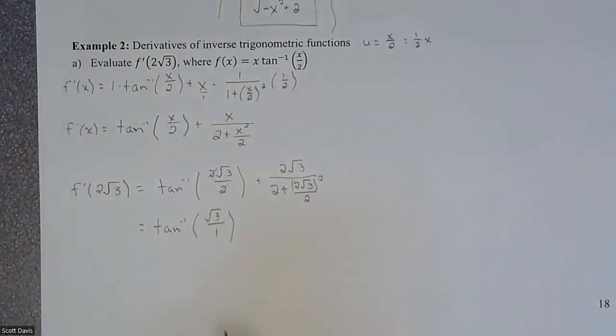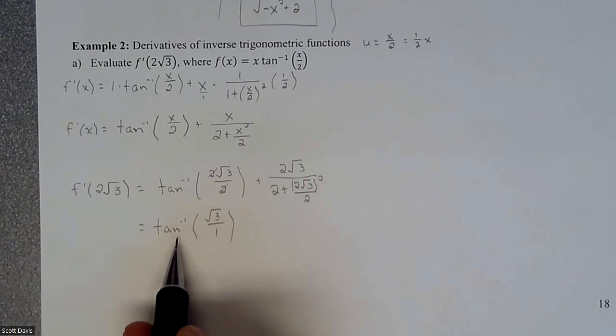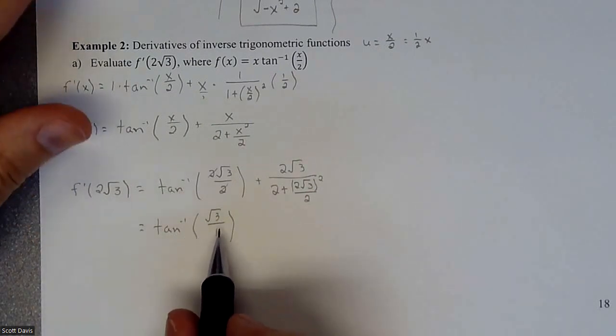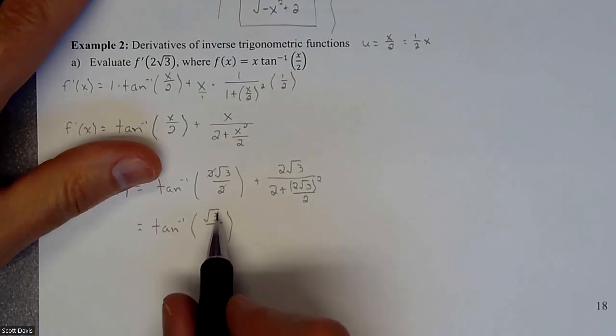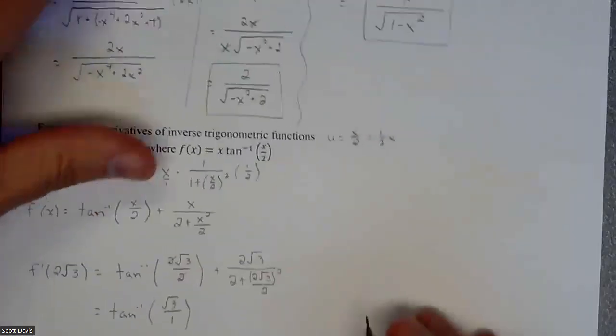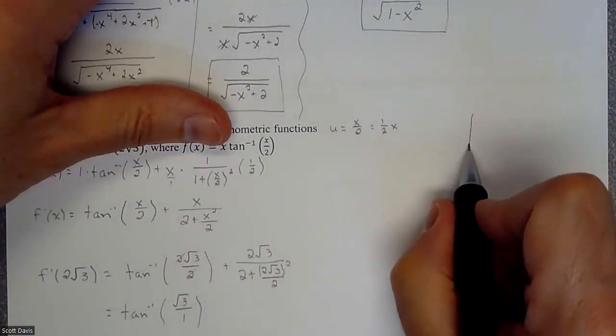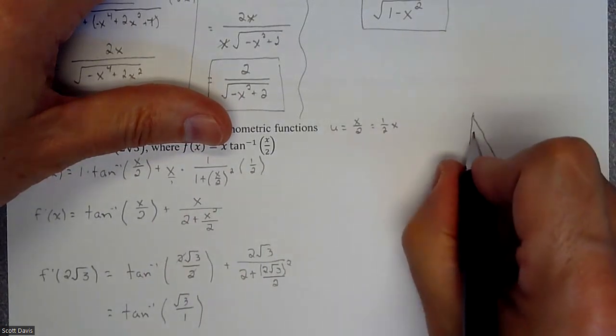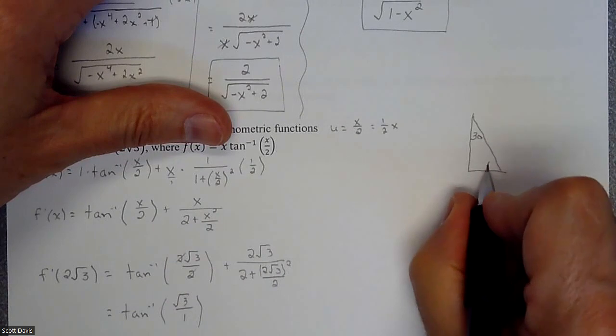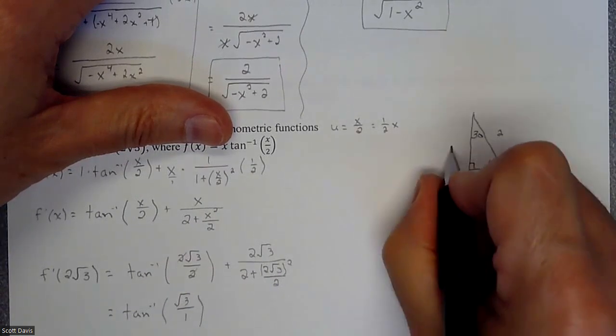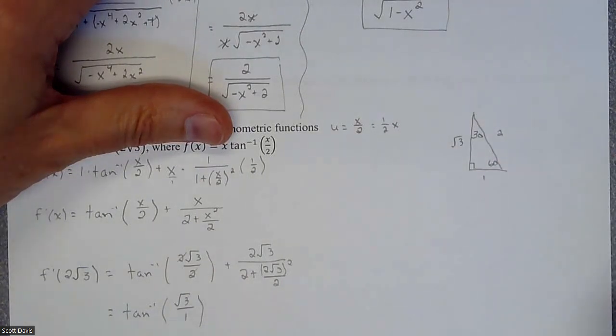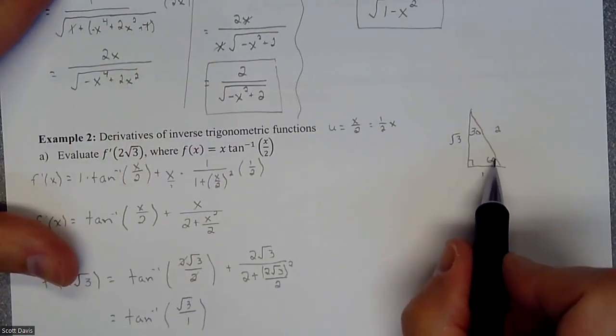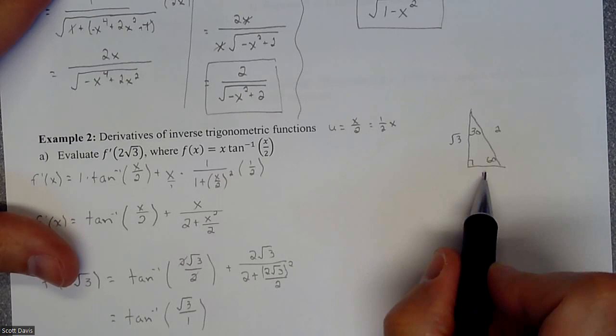Those twos go away, and I'm actually going to write it as this, because I'm going to draw a triangle. And I know tangent is an opposite over adjacent, so I need to draw a triangle that is going to have a root three and a one in it, which is our 30-60-90 triangle. So if I draw a basic 30-60-90, I'm looking at a one, two, root three relationship on the sides.